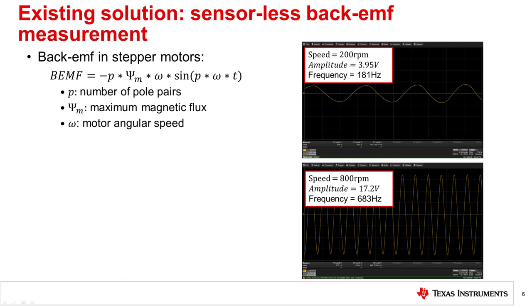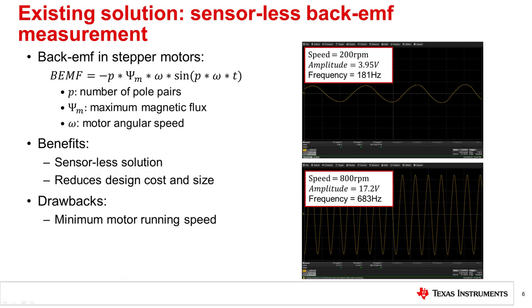Therefore, a drop in back EMF is a good indication that the motor is stalling. A benefit of sensorless stall detection solutions is that they can be implemented without any sensors, eliminating the need for any additional external components and reducing the design cost and system size. A fundamental limit on the performance of back EMF stall detection methods is the minimum back EMF voltage they can detect, which corresponds to a minimum motor speed for the algorithm to properly detect a stall condition. The minimum speed for successful back EMF stall detection will change for various motors depending on the number of poles and the maximum magnetic flux.